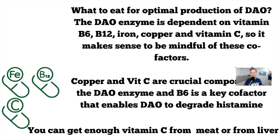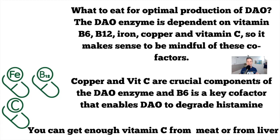To get DAO production optimal, understand that the DAO enzyme is dependent on certain cofactors: vitamin B6, B12 — which are plentiful if you're eating good quality protein — iron, copper, and vitamin C. Copper and vitamin C are crucial components of the DAO enzyme; B6 is a key cofactor that enables DAO to degrade histamine. Eating this way likely provides these in plentiful supply, and contrary to popular belief, there is vitamin C in meat and liver.